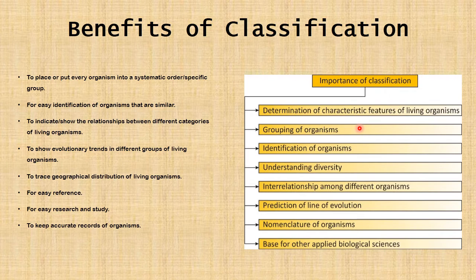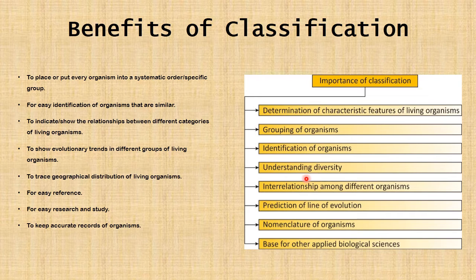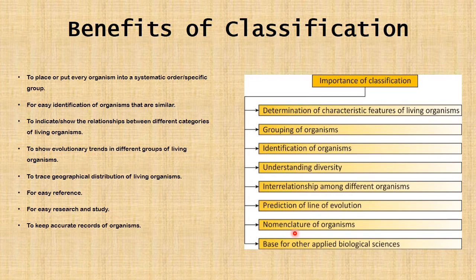Looking further at the importance of classification: it helps in the determination of characteristic features of living organisms, helps in the grouping of organisms, identification of organisms, understanding diversity, understanding the interrelationship among different organisms, prediction of evolutionary lines, nomenclature of organisms, and ease for other applied biological sciences.